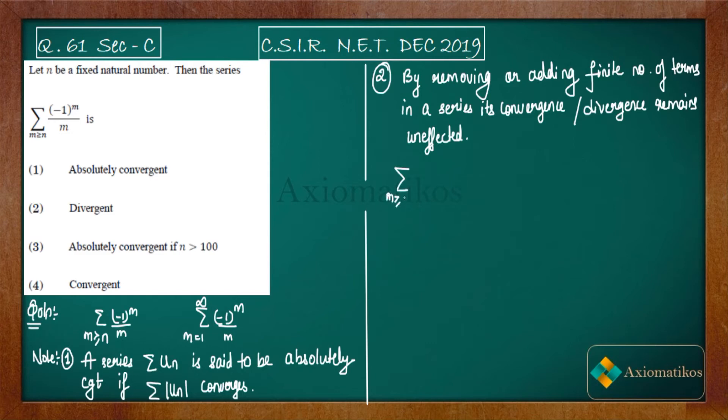∑|(-1)^m / m| equals ∑1/m, where m ≥ n. Now what do you know? You know that a p-series—summation 1/n^p—is called a p-series.